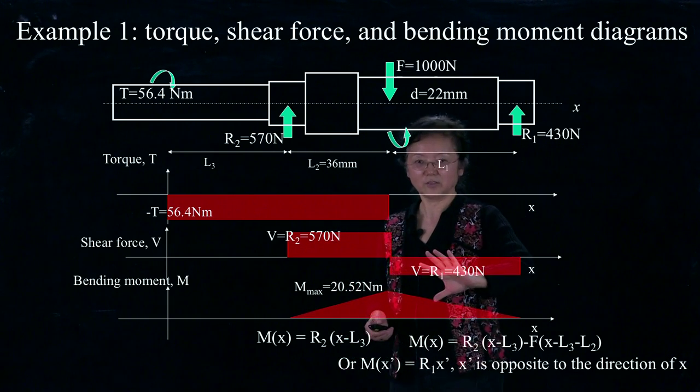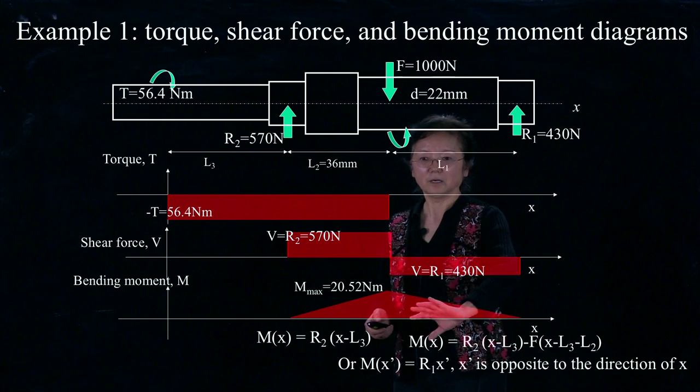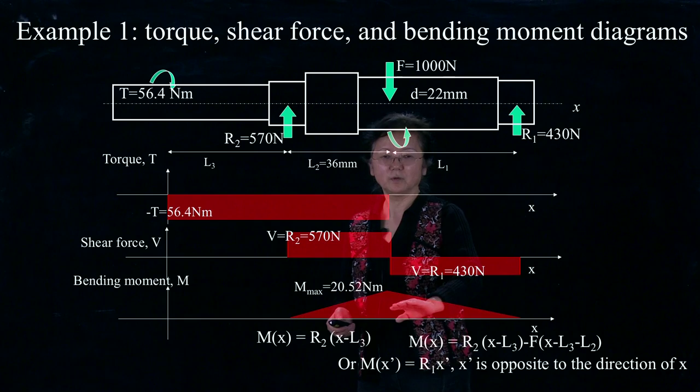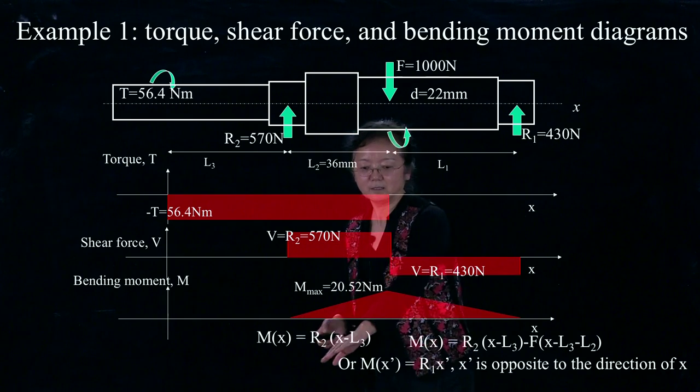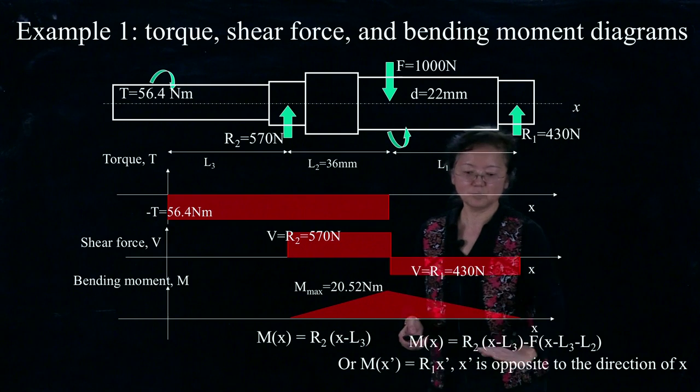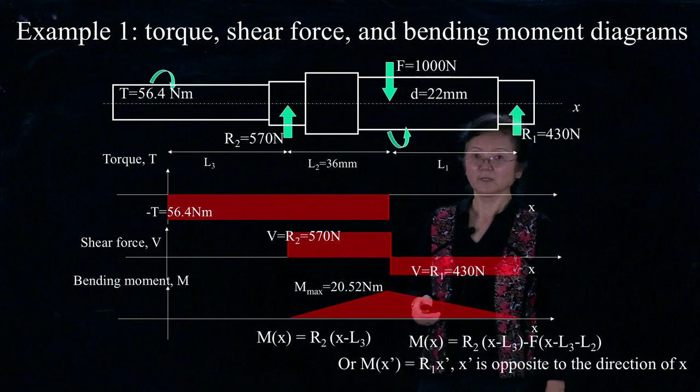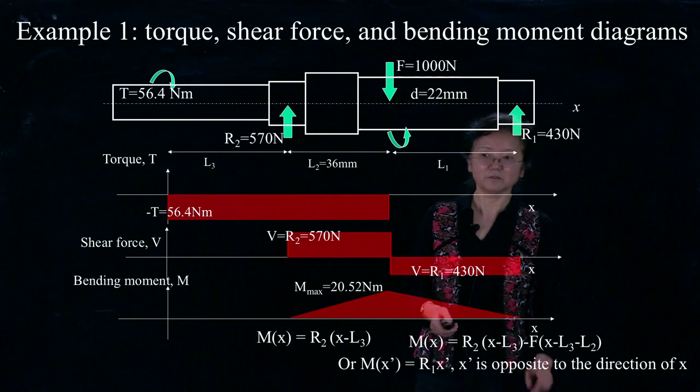No matter what, we get these three diagrams very easily. You see here, there's a differential relationship between shear force and bending moment. Shear force basically is the slope of bending moment. The slope is positive, so we have shear force positive. And this slope is negative, so we have the shear force over here negative. I think this is the end of the first movie.